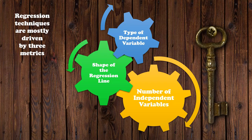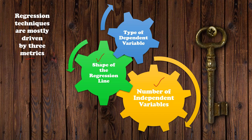Regression types differ based on three criteria. The first is the number of independent variables — if only one independent variable and one dependent continuous variable, we use simple linear regression. If two or more independent variables with one dependent, we use multiple linear regression. The second criterion is the shape of the regression line. If the relationship is linear, we use linear regression; if the distribution is curved or polynomial in nature, we use a different kind of regression.